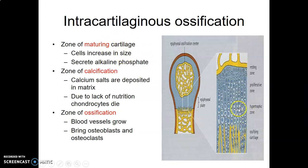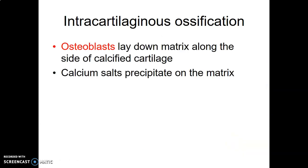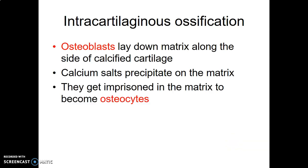In the hypertrophic zone, maturing cartilage cells increase in size and start secreting alkaline phosphatase. In the calcification zone, calcium comes in leading to ossification, and blood vessels grow in bringing other cells. The zones are: resting zone, proliferative zone, hypertrophic zone, and then ossification occurs as calcium is deposited.